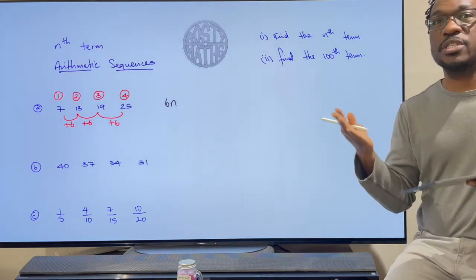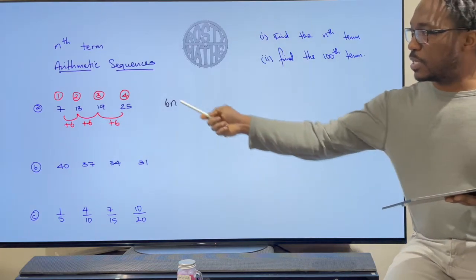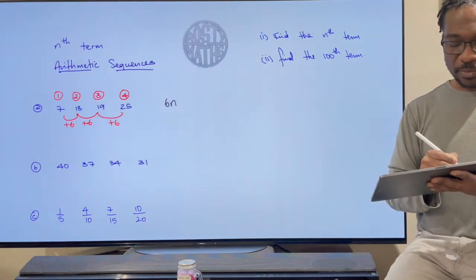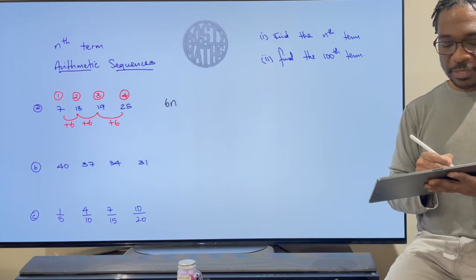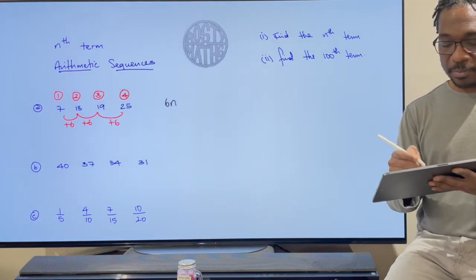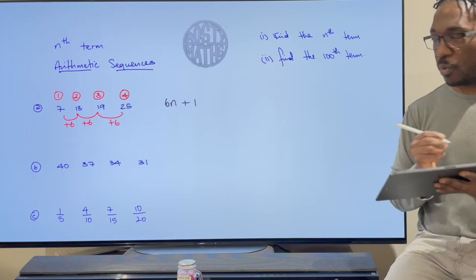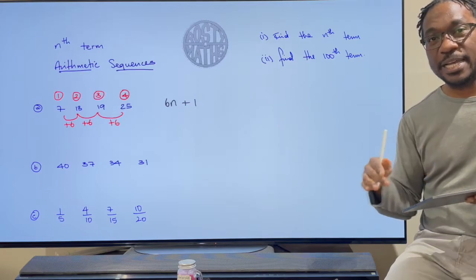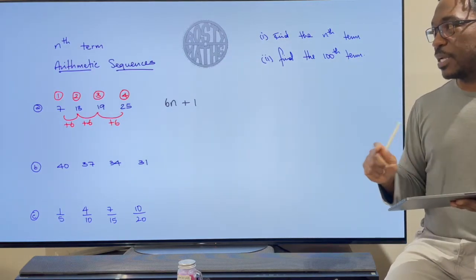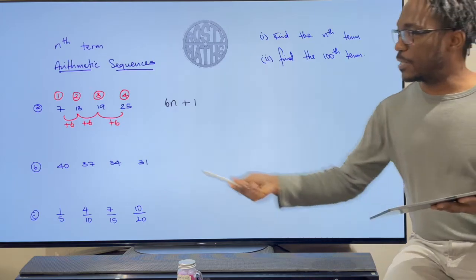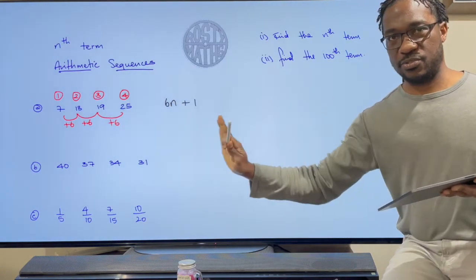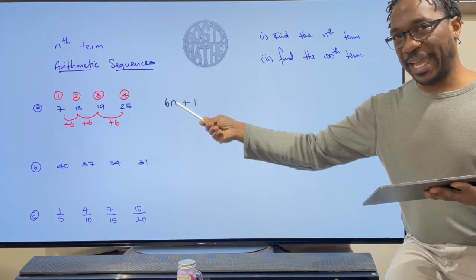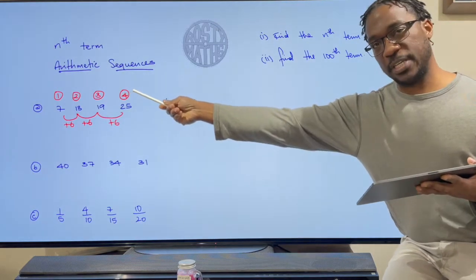There are two ways I normally sort this out — see which way works for you. Here is Method 1: as soon as I get the common difference, I write 6n, then I go back and find what the zero term would be. If the sequence was going up in sixes, the term that comes before the first term is 1, and just like that, that's my nth term: 6n + 1.